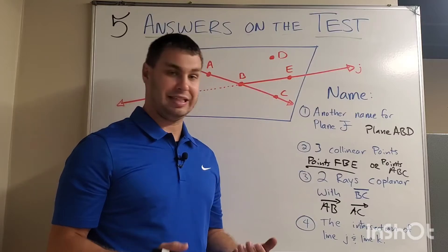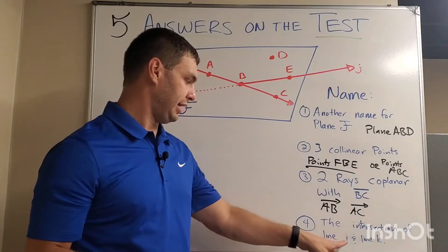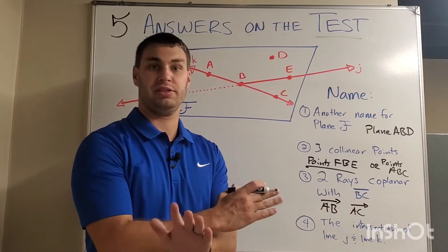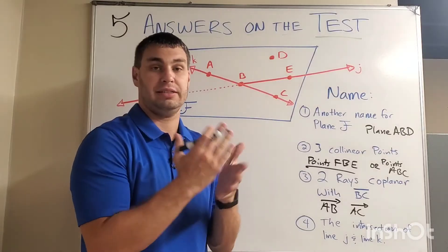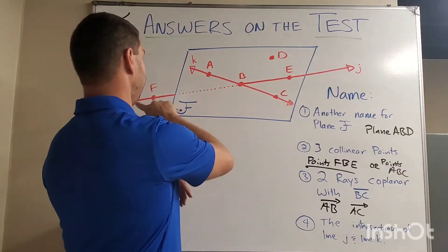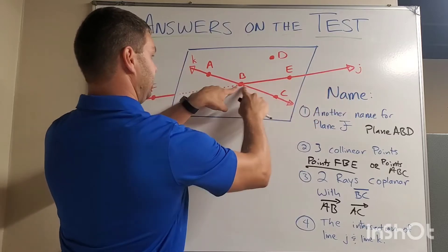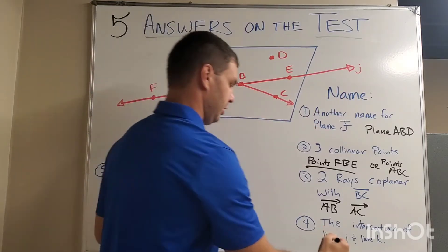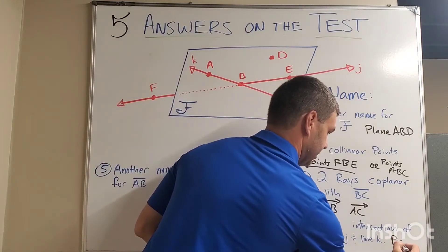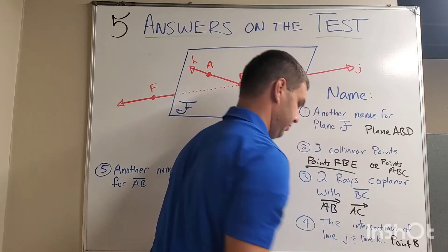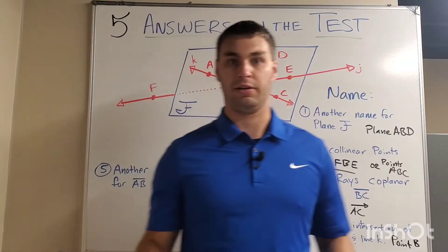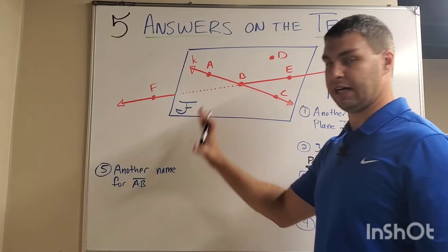Number four. This one says I need the intersection of line J and line K. Intersection is just wherever they cross. Where do those two things touch each other? So, if I look at this here, I see line J and line K touch each other at point B. So, I would just say point B. Point B is where they touch each other. And I did give you a bonus one for this first section.